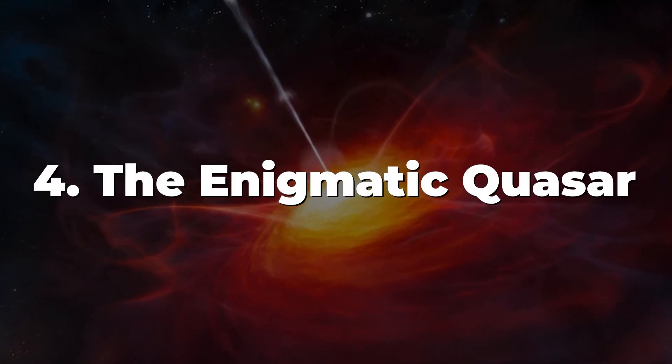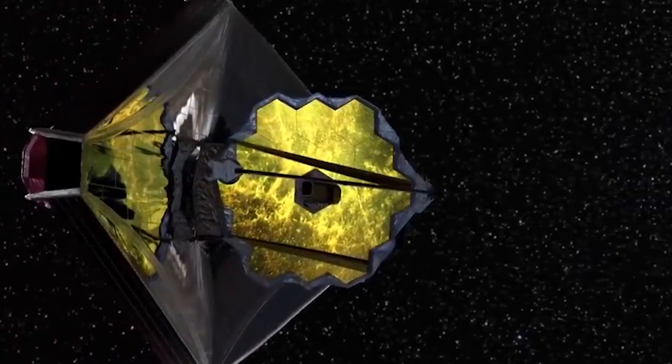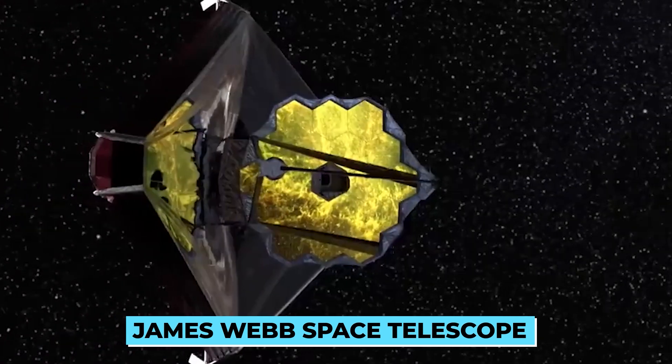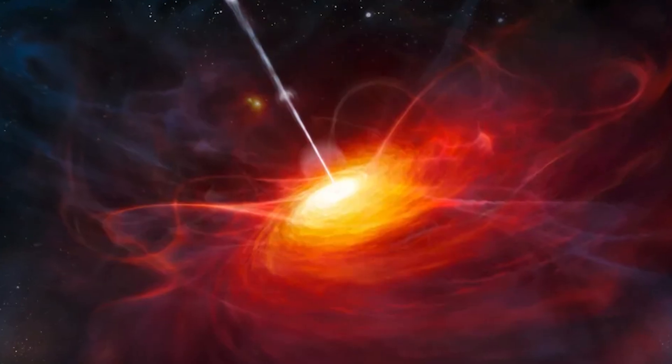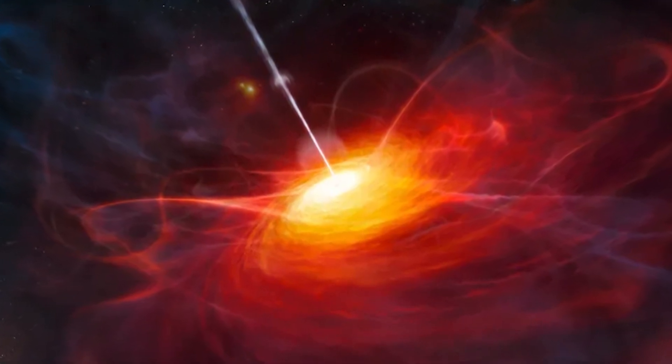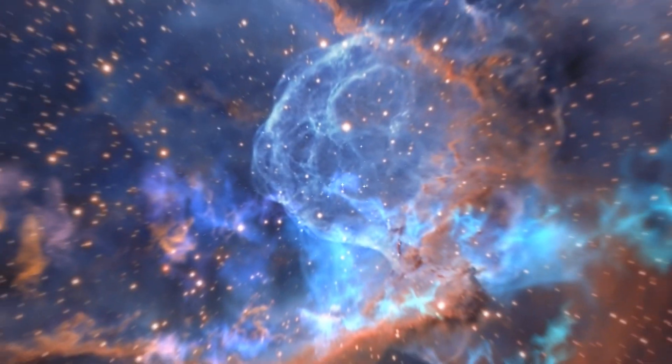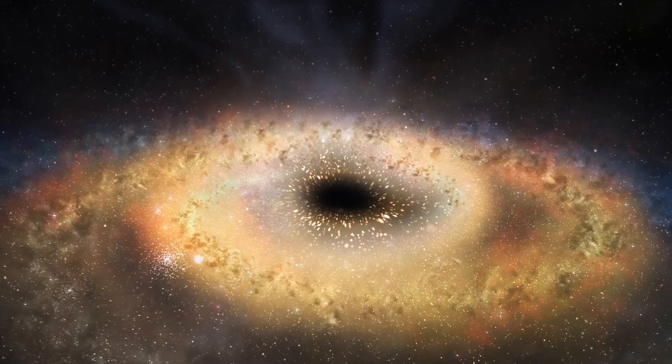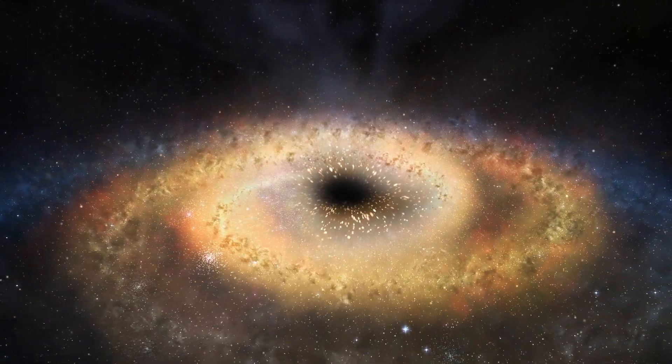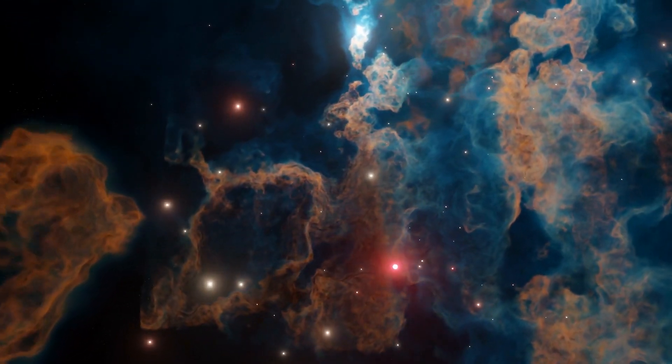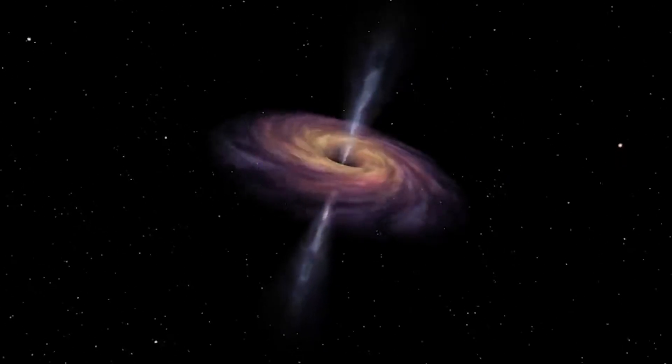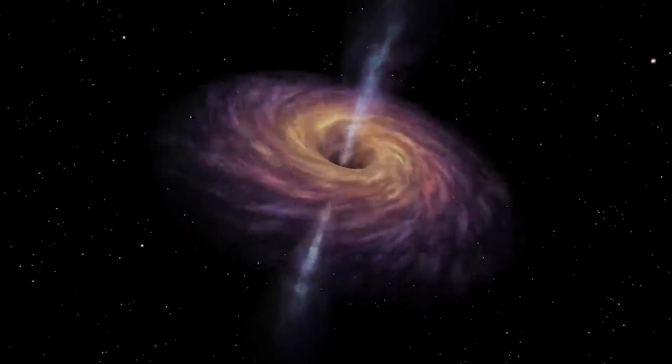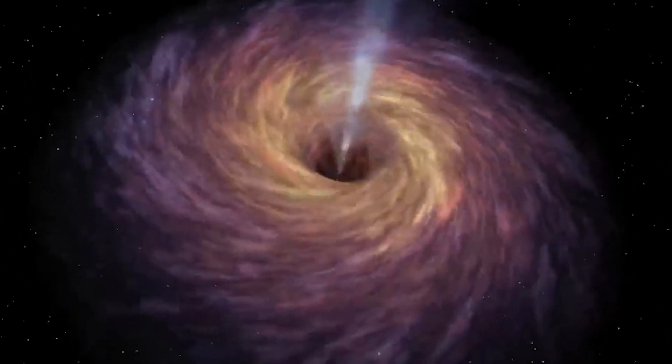Number 4. The Enigmatic Quasar. The James Webb Space Telescope explored the darkest reaches of the cosmos and discovered a mysterious quasar that was producing potent radiation. This quasar, located billions of light-years away, presents a significant challenge to our understanding of black holes and their impact on the early cosmos. Supermassive black holes at the center of quasars are what gives them their incredible brightness and energy.